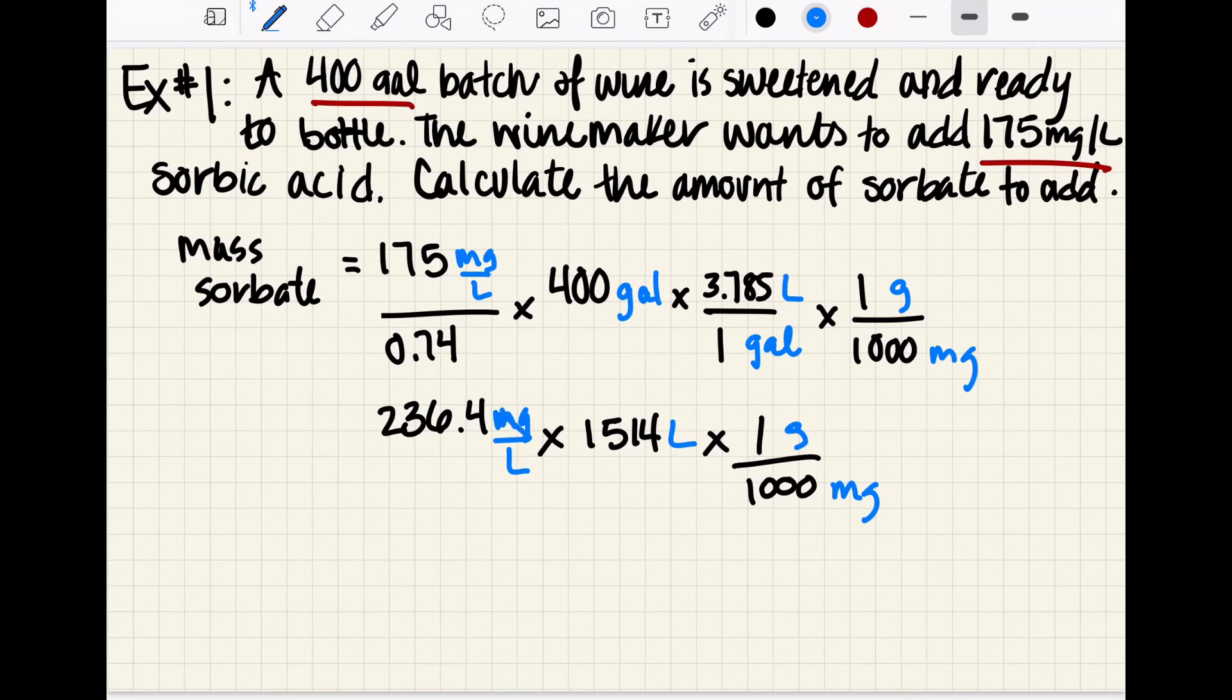Okay, now we can cross out some units, our milligrams cross out, our liters cross out, so when we finish up the math we will end up with our answer in grams which is what we want. Okay, so if we do 236.4 times 1,514 divided by 1,000, we end up with 358 grams sorbate to add.